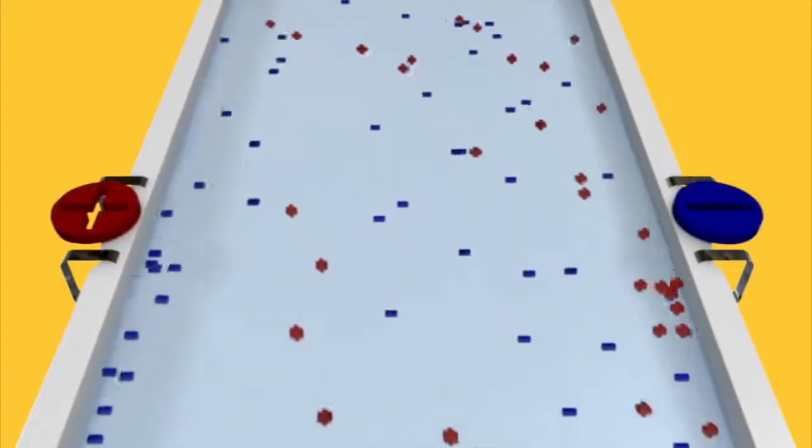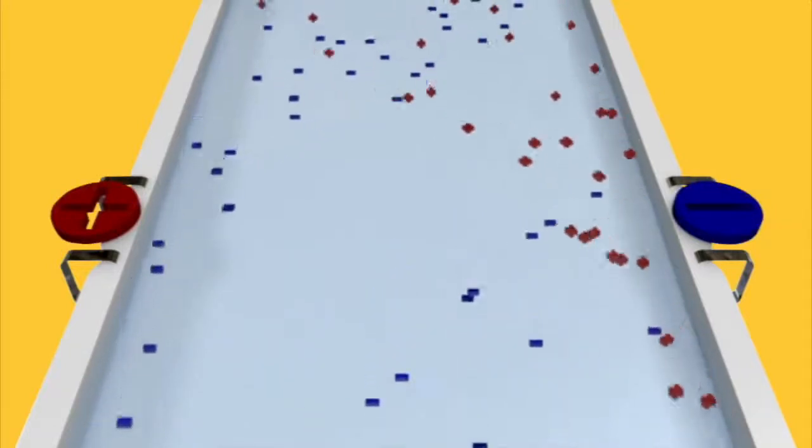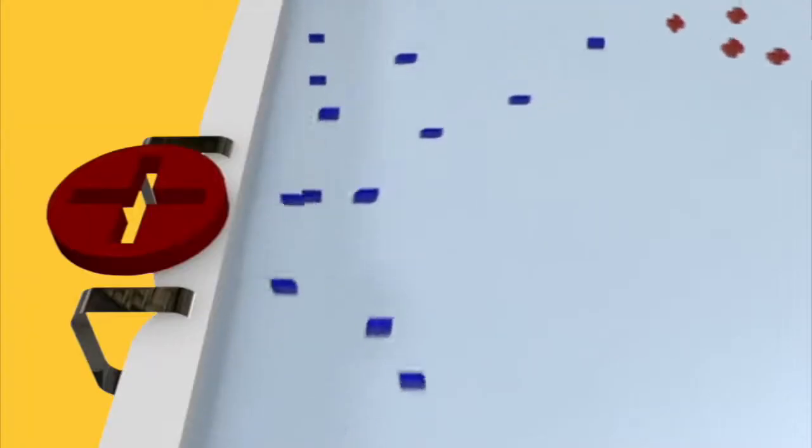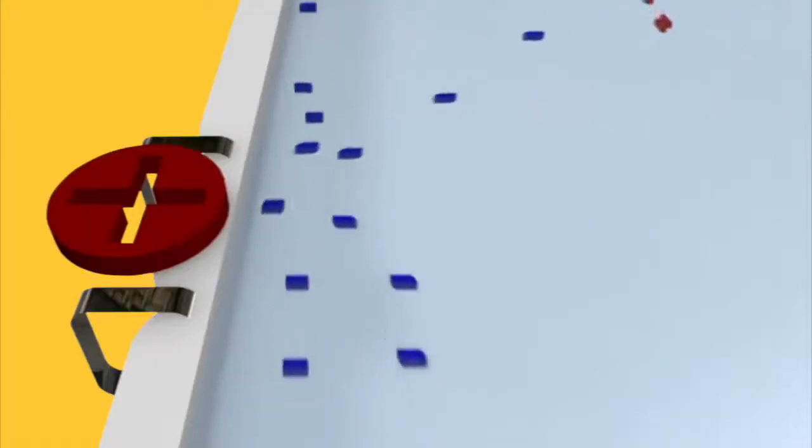Electrodes are placed on each side of the water flow, and a small electrical field is applied. This causes the positive ions to migrate toward the negative electrode and the negative ions to migrate toward the positive electrode.